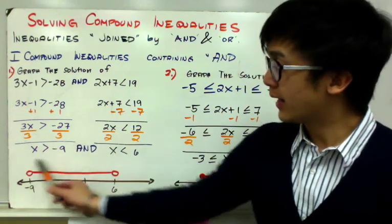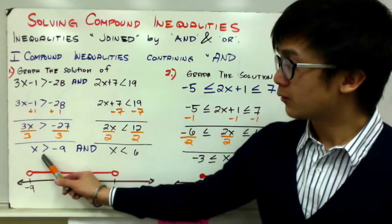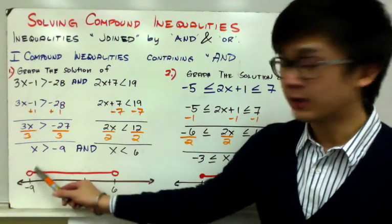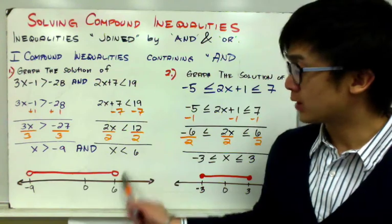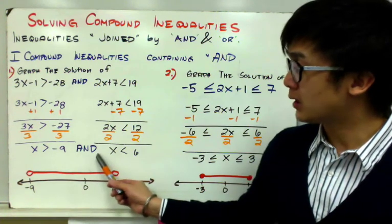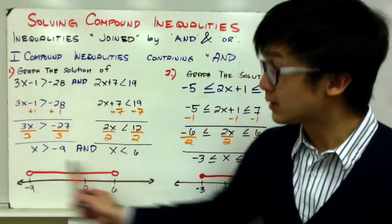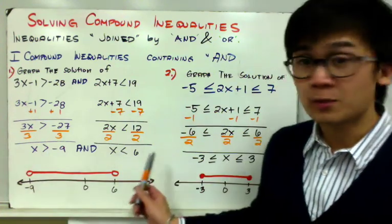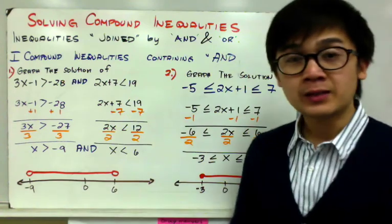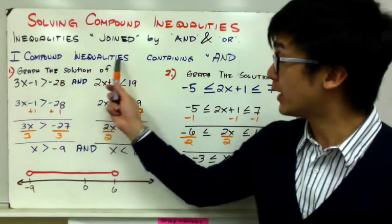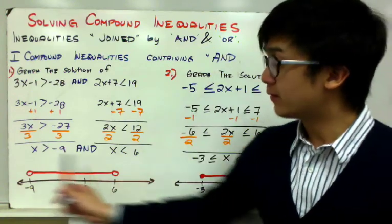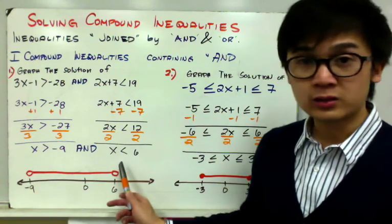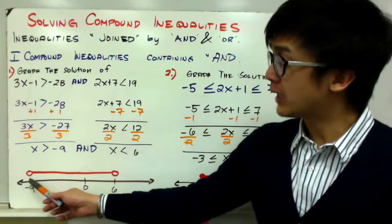To graph the compound inequality with an AND operation, all you need to do is get the graph of x greater than negative 9. Since this is greater than, you will need an open circle on negative 9, and an open circle for positive 6. Since this is an AND operation, it will connect the two points at negative 9 and 6, meeting them in the middle. All AND operations will have a graph similar to this one — it connects in the middle with your two circles on the sides.